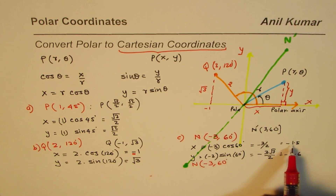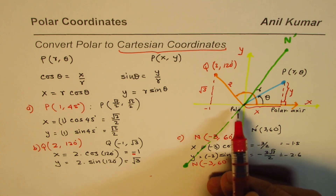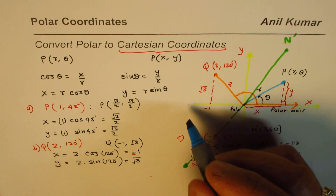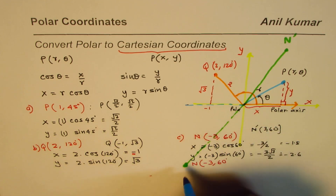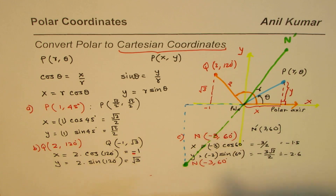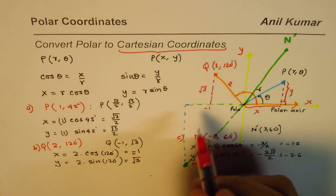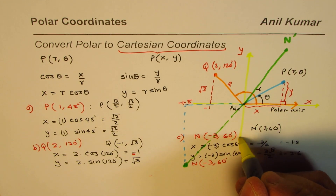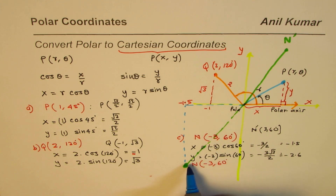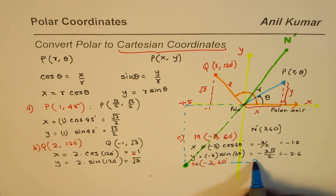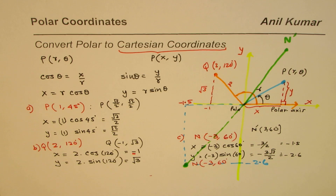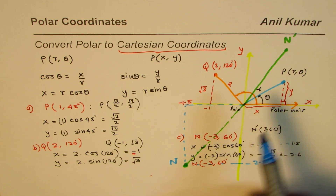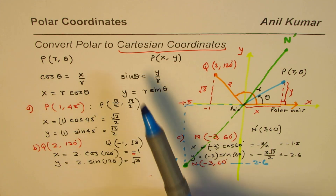Looking at the coordinate plane, we get x = -1.5 and y = -2.6, and that point is N. This fits very well with the concept we have learned about polar coordinates and Cartesian coordinates. A negative distance r can be represented like this, and we can find its equivalent on the Cartesian coordinate system.